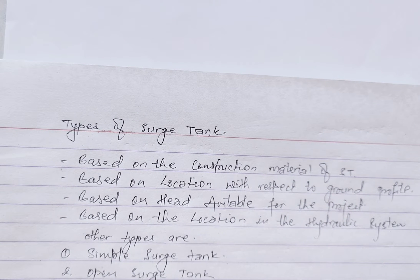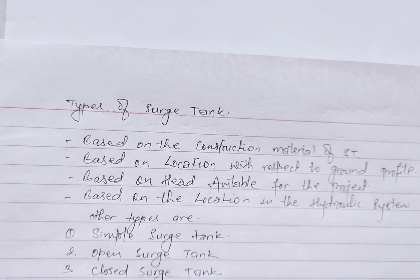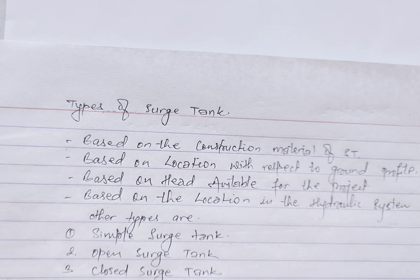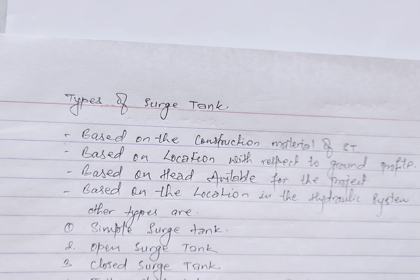A simple source tank is a basic design with an air cushion that absorbs pressure variations and controls water hammer in pipelines. An open source tank has an open top allowing air to come in contact with the fluid, facilitating gas absorption and preventing cavitation. A closed source tank is sealed to prevent air exchange with the surrounding atmosphere and is suitable for systems where preventing gas exchange is essential.